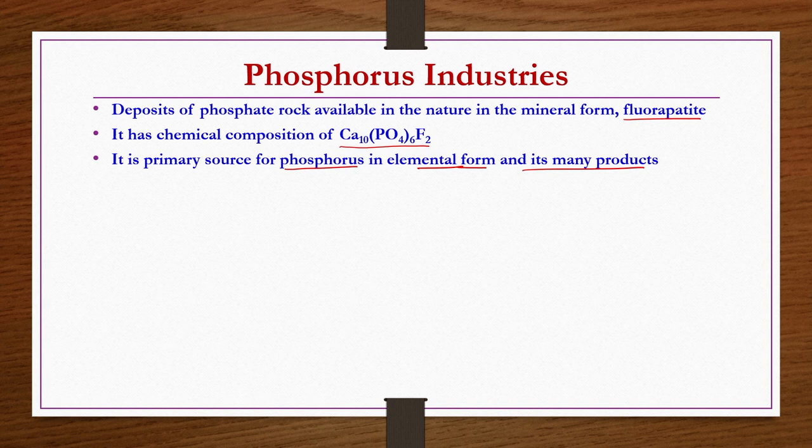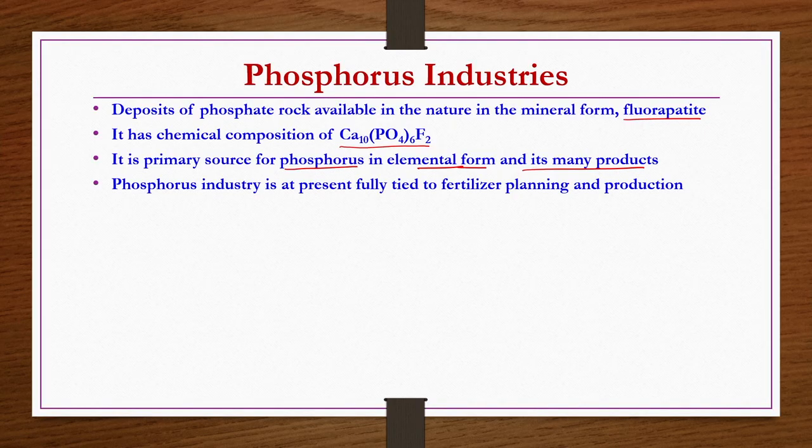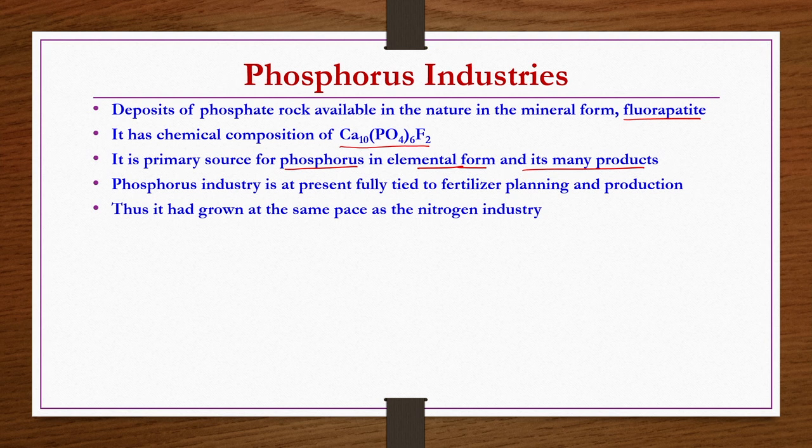At present, the phosphorus industry is primarily associated with fertilizer planning and production, because whatever phosphorus is produced is utilized for the production of phosphoric acid or phosphorus fertilizers. That is the reason the phosphorus industry is fully tied to fertilizer planning and production, especially in India. Nitrogen is indigenous for any country since we get it from the air, but phosphorus and potassium are not available in many countries including India, so we depend on imports.